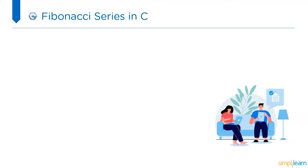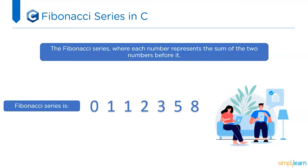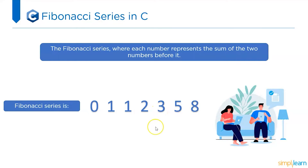Without further delay, let's begin. First, let's understand what is the Fibonacci series. The Fibonacci series is where each number represents the sum of the two numbers before it. Here we have the series: 0, 1, 1, 2, 3, 5, and 8. So 0 plus 1 is 1, then 1 plus 1 is 2, 2 plus 1 is 3, 3 plus 2 is 5, and 5 plus 3 is 8.